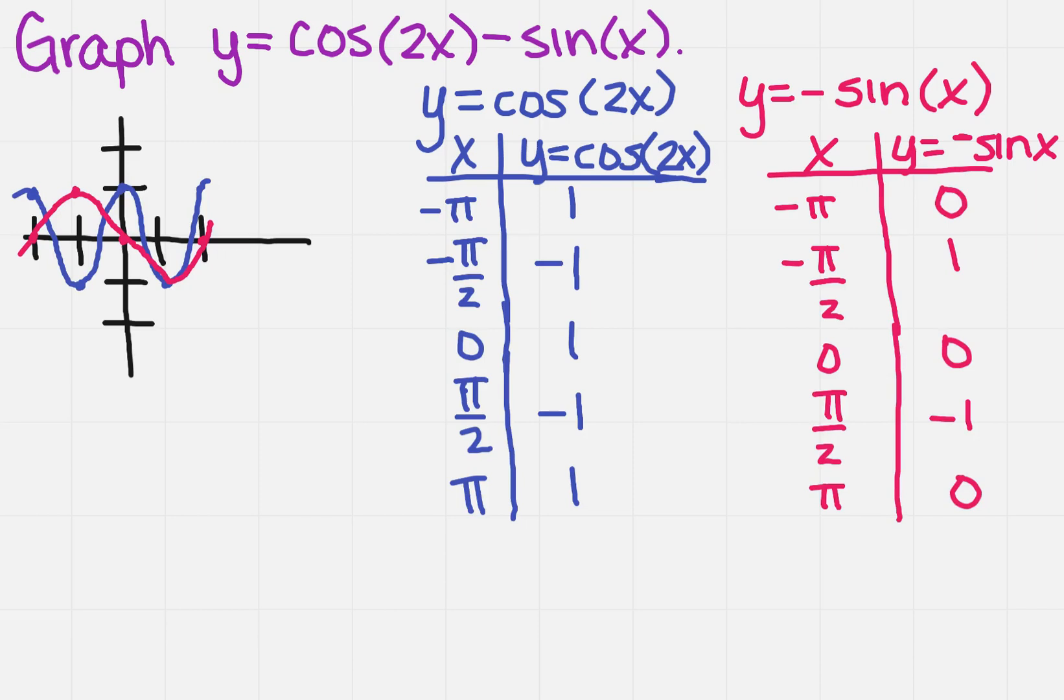So when I graph these two functions on the same graph on the left, this is what it should look like. Now hopefully your scale is way cooler than mine, but as usual, you know I'm running out of space. So this is what it should resemble. Now how are we going to actually find the function that we're looking for?